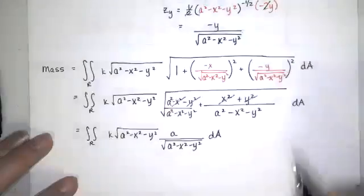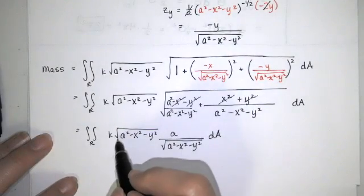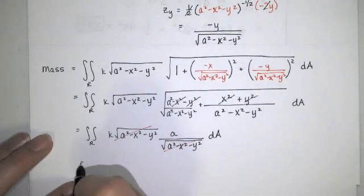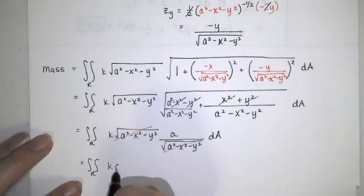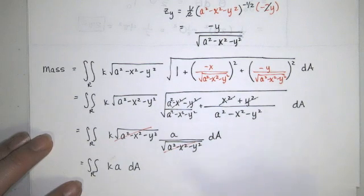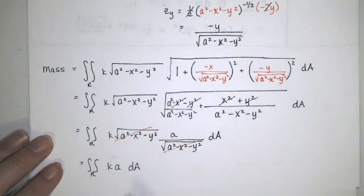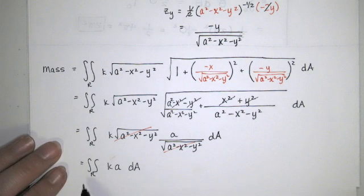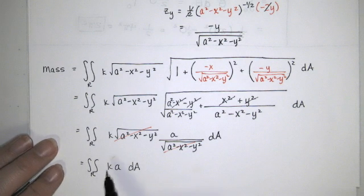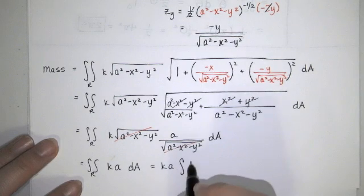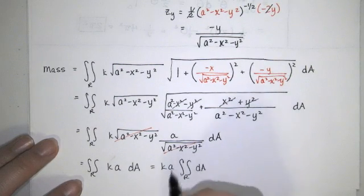That is really convenient. The expression for z actually reduces, and we end up with the double integral over R of k times a. Since k and a are constants, this is k times a times the area of the region R.